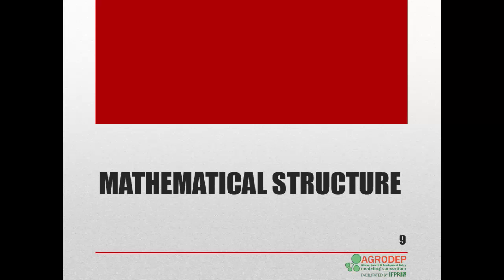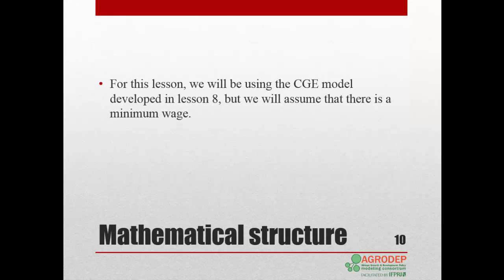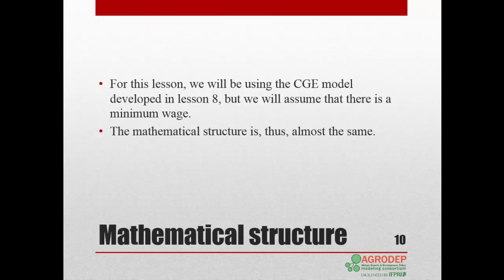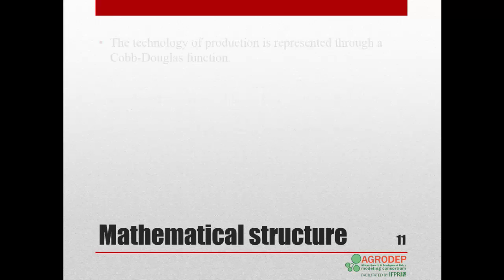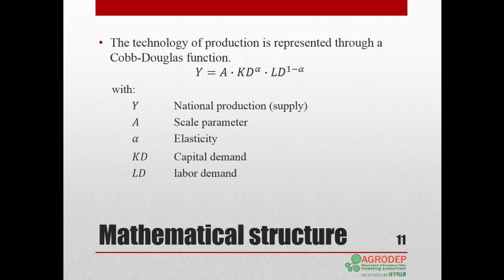First we will cover the mathematical structure. To illustrate, we use the CGE model developed in Lesson 8, but we impose the minimum wage on the economy. The production technology is represented by a Cobb-Douglas function: y = A × Kd^α × Ld^(1−α), where y is national production or supply, A is a scale parameter, α is an elasticity, and Kd and Ld are factor demands.